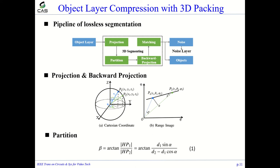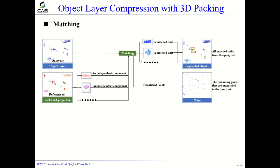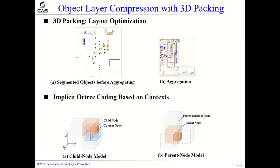The forward and backward projections support the conversion between custom coordinates and a range image. The points projected into the range image are partitioned according to equation 1. The matching step is the key to realize lossless segmentation, which conducts the matching between reference set and query set with k-nearest neighbor search. To aggregate points of the object layer and reduce frame space, we make objects close to each other by translating the units.